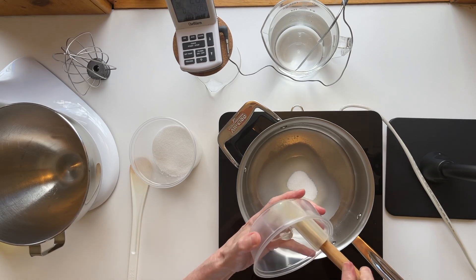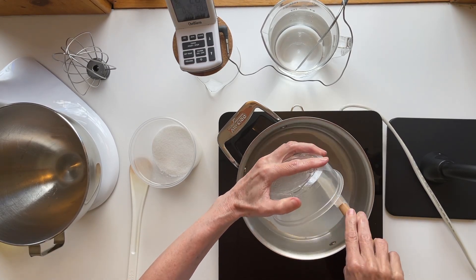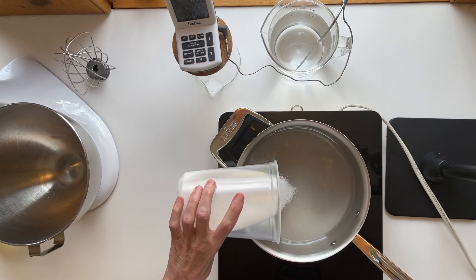Italian meringue is a syrup poured over egg whites, so you always want to add water to your pot first, then a third of the sucrose.